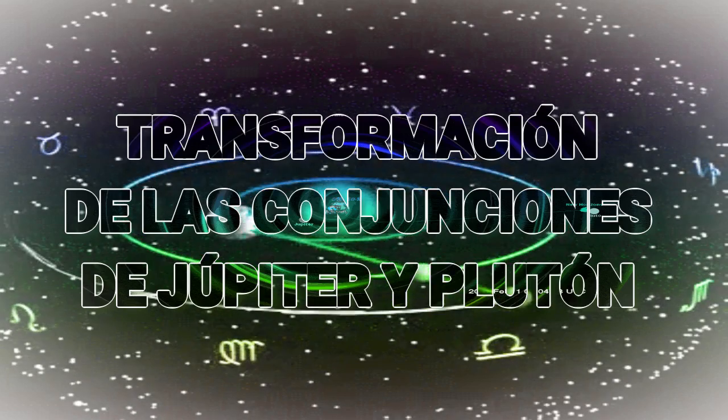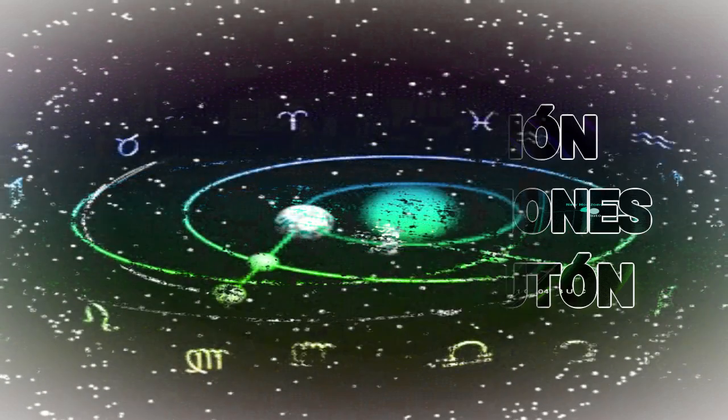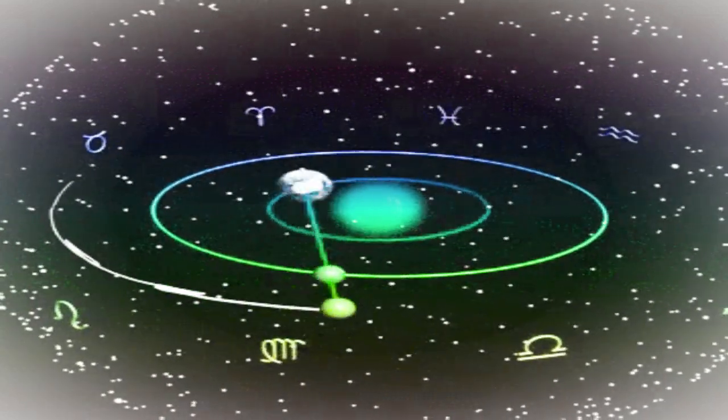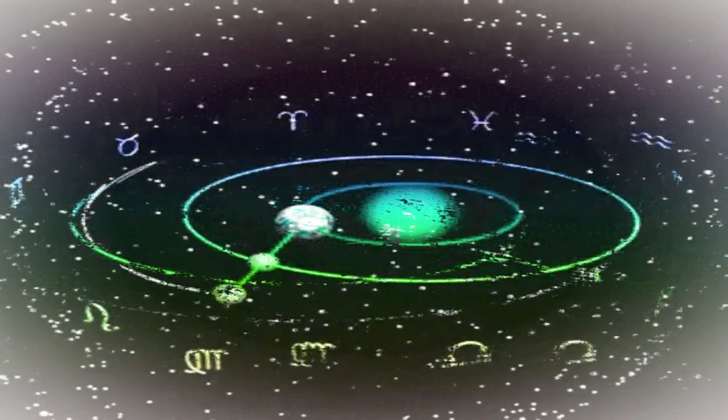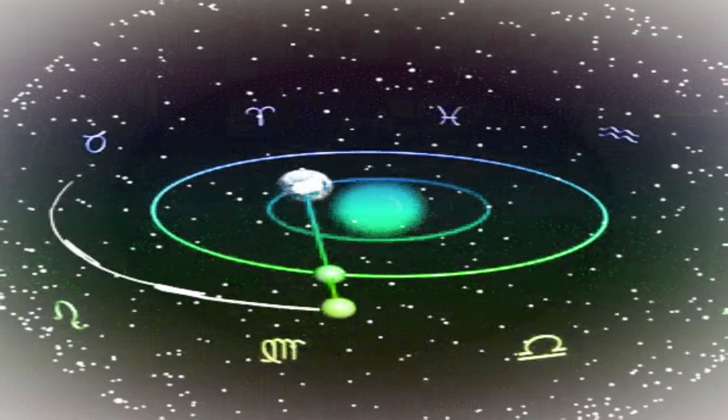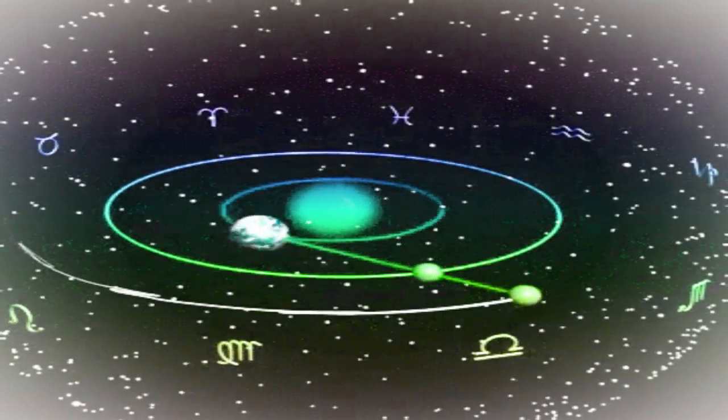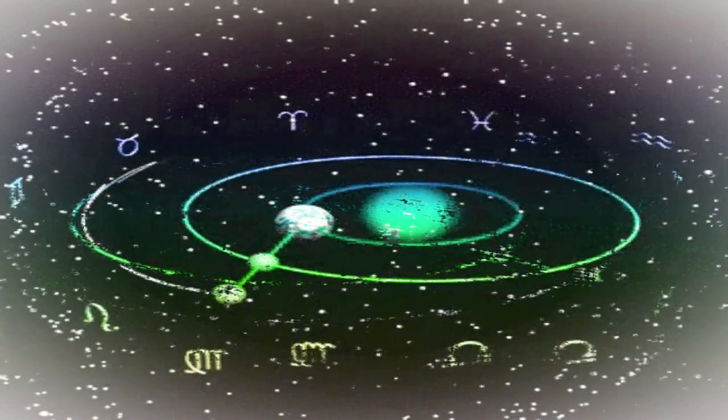Transformación de las conjunciones de Júpiter y Plutón. Saludos. El año 2020 anuncia una serie de conjunciones de Júpiter y Plutón que ocurrirán en el signo de Capricornio entre abril y noviembre.